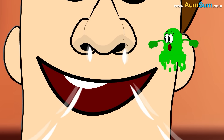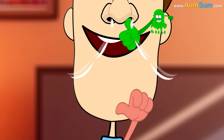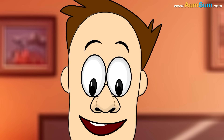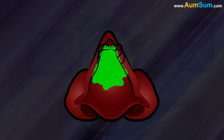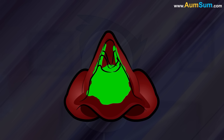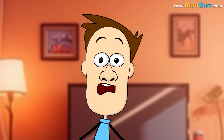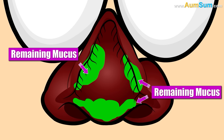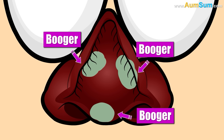Mucus helps catch harmful viruses, dirt, germs and pollen and thus protects our lungs. Tiny hairs inside our nose called cilia move the mucus along with the trapped stuff towards the front of our nose. Now when we sneeze or blow our nose, the mucus comes out. If some mucus along with the debris remains in the nose, then it starts to dry out and clumps together and finally becomes a booger.